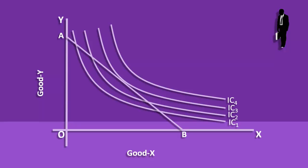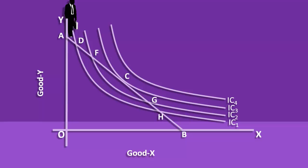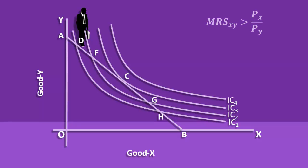As a first step, he identifies all points common to both the Indifference Curves and the price line — these are points D, F, C, G, and H. The consumer decides to move from point A. He moves down and reaches point D. He examines his position and finds he is on Indifference Curve 1. He believes he can go for a higher level of utility, so he compares the marginal rate of substitution of X for Y with the price ratio. The MRS of X for Y is greater than the price ratio, so he substitutes good X for good Y and moves down.